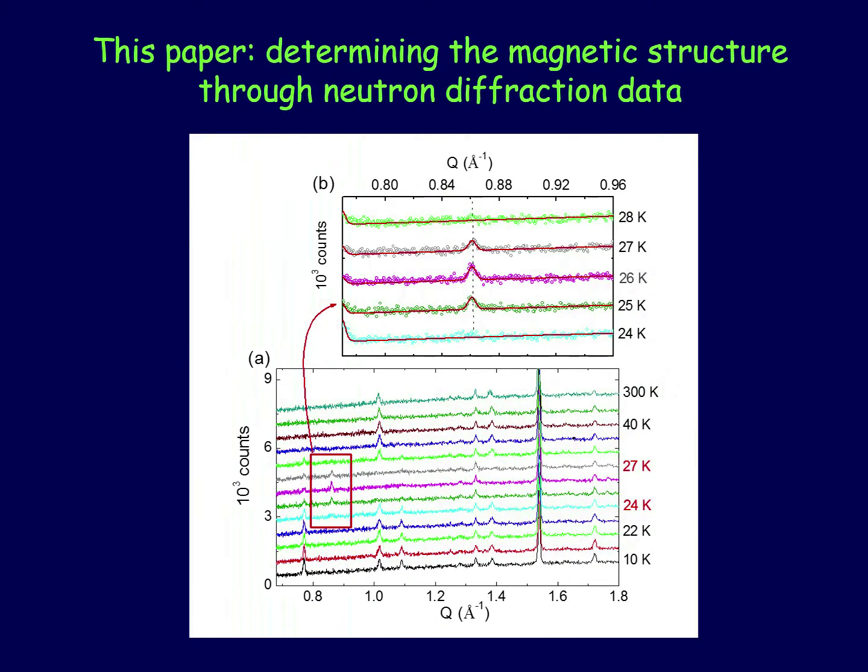In order to find the magnetic structure, we performed neutron diffraction. I want to call your attention to a small magnetic reflection which appears at the same temperature window from 24 to 27 Kelvin, coinciding with the double peak in the specific heat.